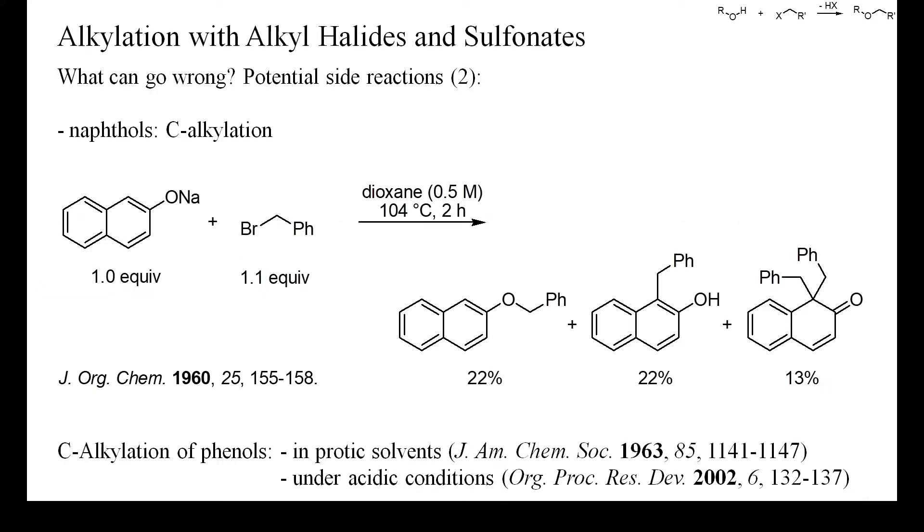Some phenolates, in particular deprotonated naphthols, react with electrophiles more like ketone enolates than true phenolates. Here, for example, benzylation of sodium 2-naphthoxide yielded large amounts of products alkylated at carbon. The regioselectivity of such reactions can sometimes be controlled by the choice of solvent, protic solvents usually giving larger amounts of carbon-alkylated products.